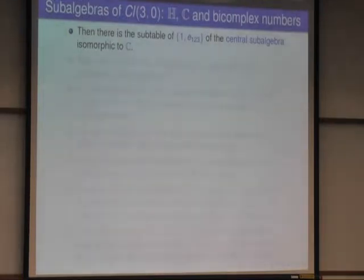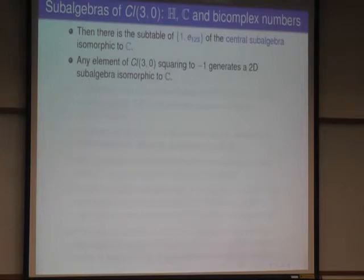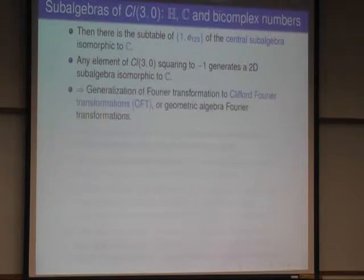And regarding subalgebras, the scalar and the trivector, this gives us a central subalgebra, so it commutes with everything, isomorphic to complex numbers. And in general, any element that squares to minus one gives a subalgebra isomorphic to complex numbers, and that's the starting point for generalizing Fourier transformations to Clifford Fourier transformations.